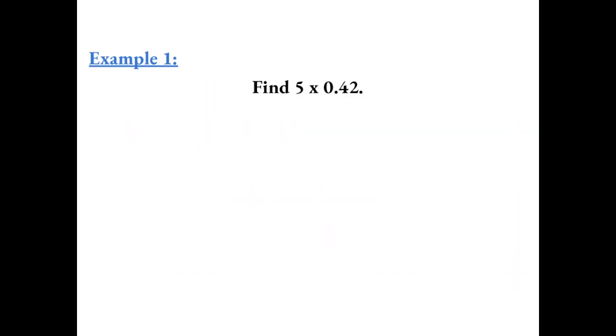Example 1: find 5 times 0.42. When multiplying decimals, we don't need to line up the decimals, so I find it easier to start with the longer number on top. So 0.42 times 5.